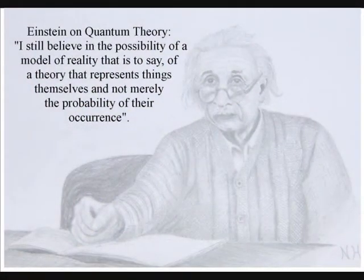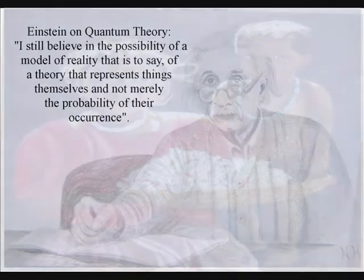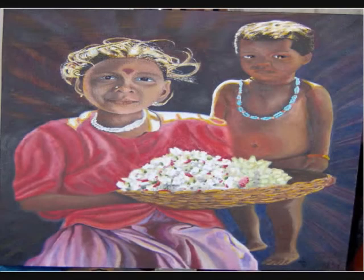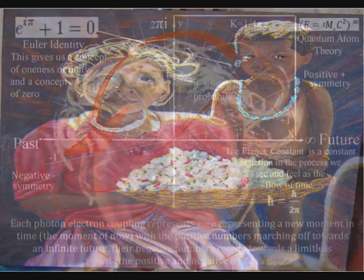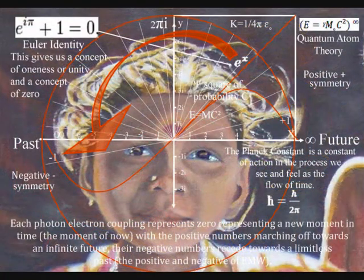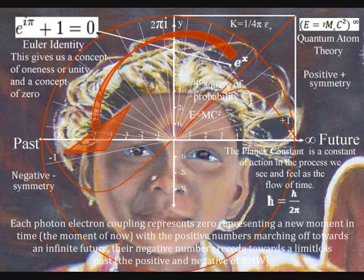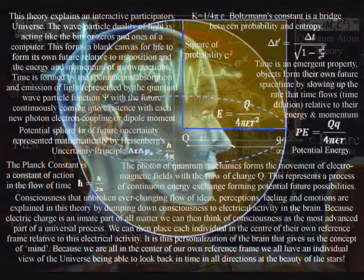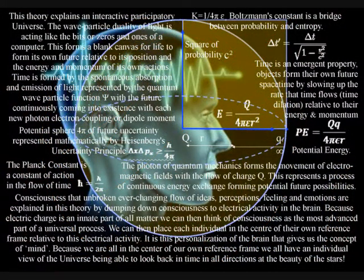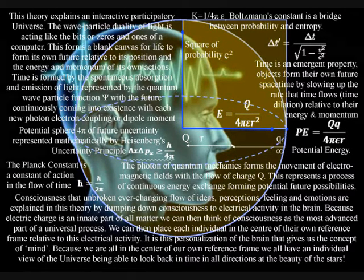One of the main reasons why physics cannot explain the nature of physical reality to the same degree that the mystic can experience it is that we have no understanding of the mysterious nature of consciousness. This theory gets around this problem by dumbing down consciousness to the level of electrical activity that is aware of its own electrical potential.